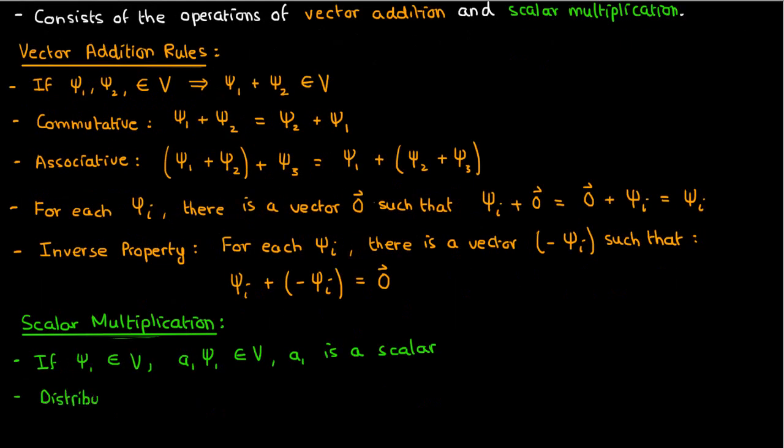Scalar multiplication must also be distributive over addition, so for instance a scalar multiplied by the sum of two vectors is equivalent to the scalar multiplied by one vector plus the scalar multiplied by the other vector. Additionally a vector multiplied by the sum of two scalars is a vector times one scalar plus the vector times the other scalar.